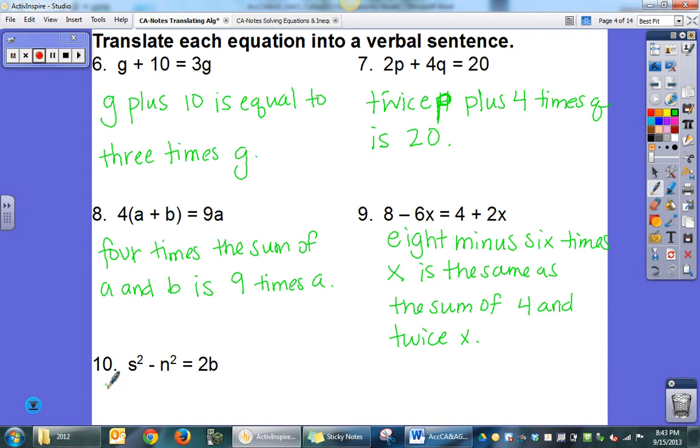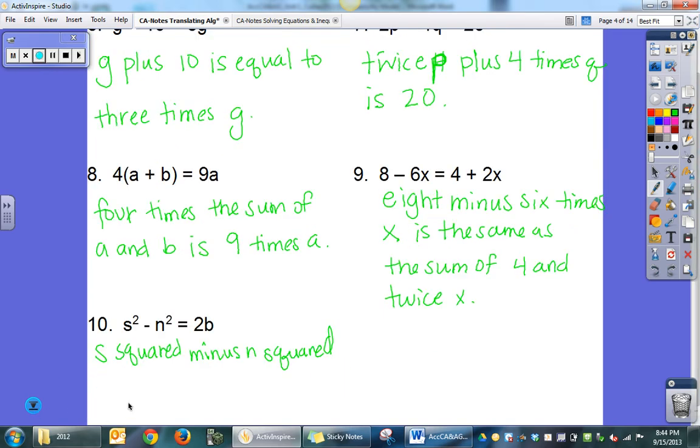You could say, again, multiple ways, but we've got s squared minus n squared is equal to twice b. Again, if you were to write something slightly different as far as the wording and it still means the same thing, that's absolutely fine.